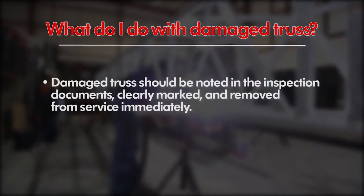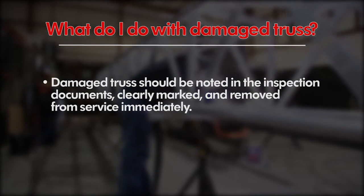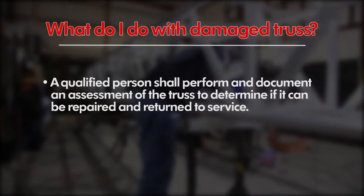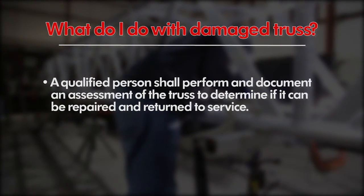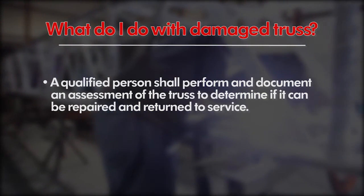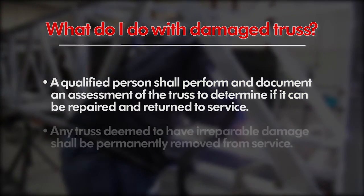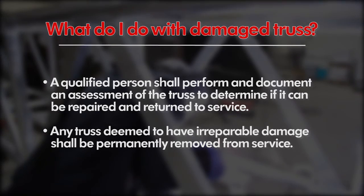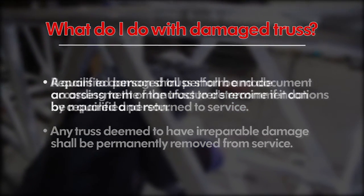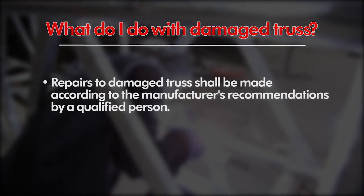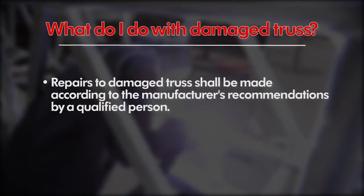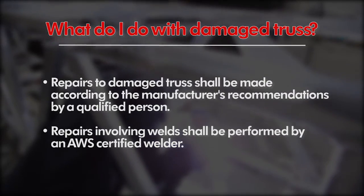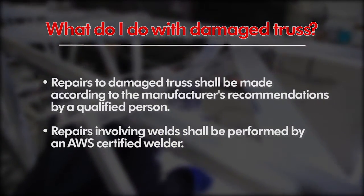Damaged truss should be noted in the inspection documents, clearly marked, and removed from service immediately. A qualified person shall perform and document an assessment of the truss to determine if it can be repaired and returned to service. Any truss deemed to have irreparable damage shall be permanently removed from service. Repairs to damaged truss shall be made according to the manufacturer's recommendations by a qualified person. Repairs involving welds shall be performed by an AWS Certified Welder.